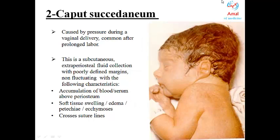The second type of extracranial hemorrhage is caput succedaneum — bleeding below the skull and above the periosteum. It is caused by pressure applied to the scalp against the dilating cervix, so it is more commonly seen in vaginal delivery. Caput succedaneum presents with subcutaneous fluid accumulation, poorly defined margins, and is non-fluctuating. Importantly, it does not take the shape of the underlying bone, which is why it can cross the suture lines.